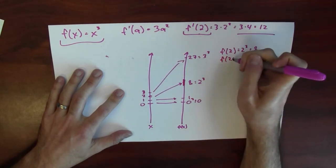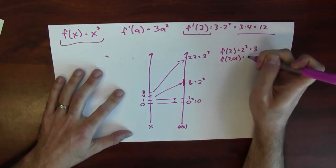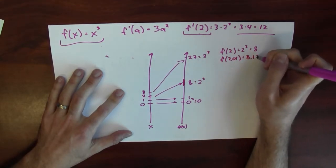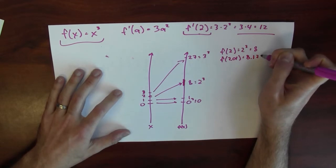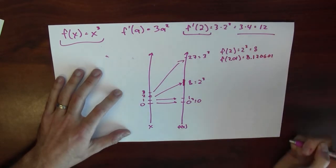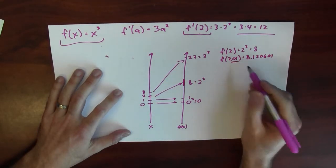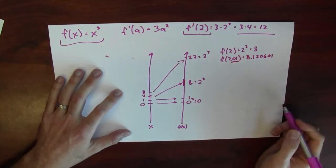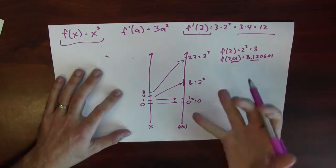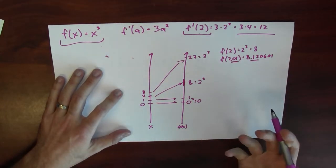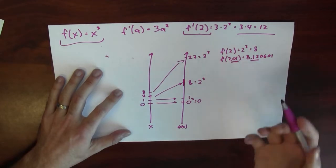F at say 2.01, well that's 8.120601. Well look, I changed the input by .01, and the output was changed by 12 times as much. 0.12 is 12 times .01.